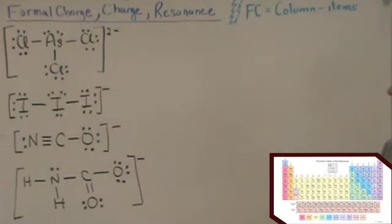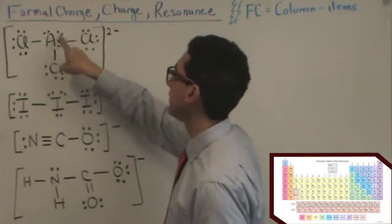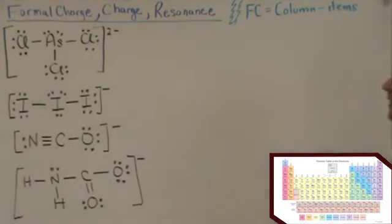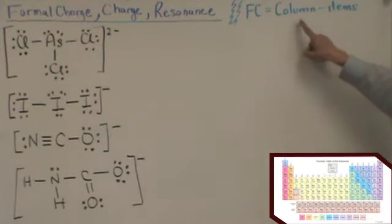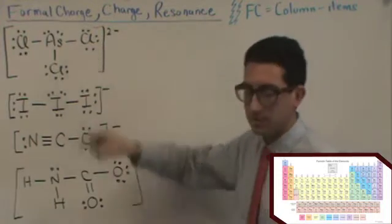Now, let's look at the arsenic. Arsenic, you'll see in your periodic tables in column 5. However, the number of items around it is 1, 2, 3, 4, 5, 6, 7. There's 7 items around it. And so, if you go 5 minus 7, you're going to get a negative 2 for arsenic.